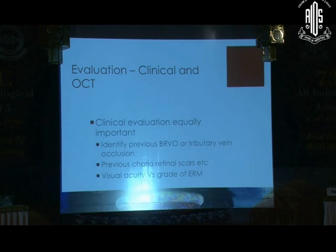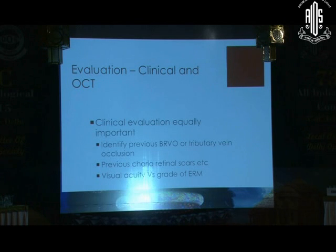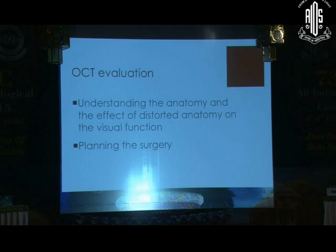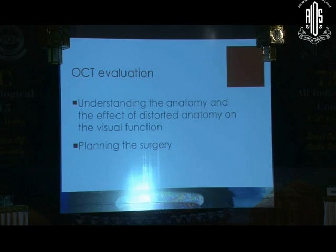A previous chorioretinal scar very close to the fovea can be obscured by a thick membrane unless you are already aware of the patient's previous history. The visual acuity should be explainable by the grade of membrane that you see — if you see a very fine cellophane membrane and the vision is 6/36, obviously that is not the cause of the vision loss. On OCT, there are two ways of understanding the evaluation: one is to understand the anatomy and the effect of the epiretinal membrane on distortion of normal anatomy and visual function, and the second is for planning surgery.